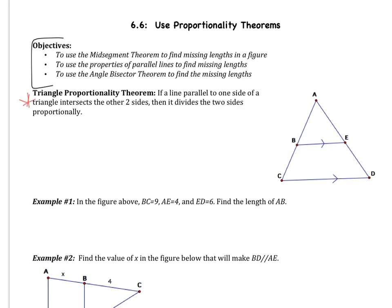Let's jump right in with the triangle proportionality theorem. It says if a line parallel to one side of a triangle intersects the other two sides, it divides the sides proportionally. Looking at the figure on the right, I have two pairs of parallel sides. The top triangle is similar to the entire triangle, so side AB of the small triangle corresponds to AC of the entire triangle. AE corresponds to AD, and BE corresponds to CD.